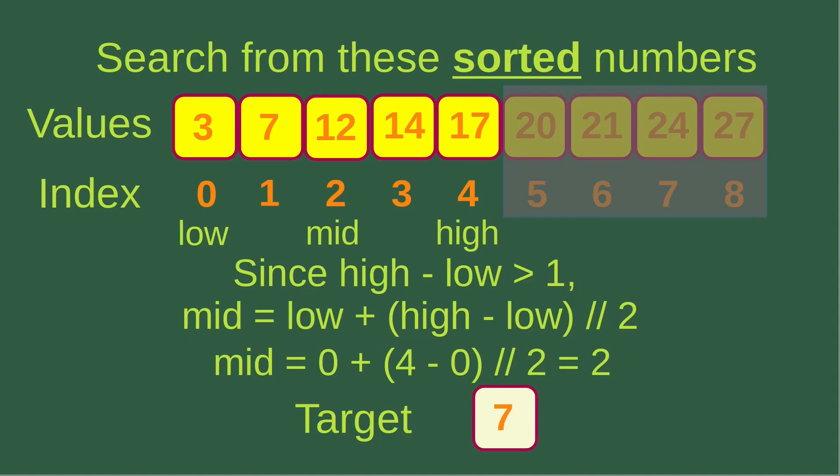The array is now shortened — I just handle the first five numbers. I check the condition again: high minus low is four minus zero, which is four, still larger than one. So I set up my new mid-index using the formula, and from the low and high indices I get two as the mid-index, which corresponds to number 12.